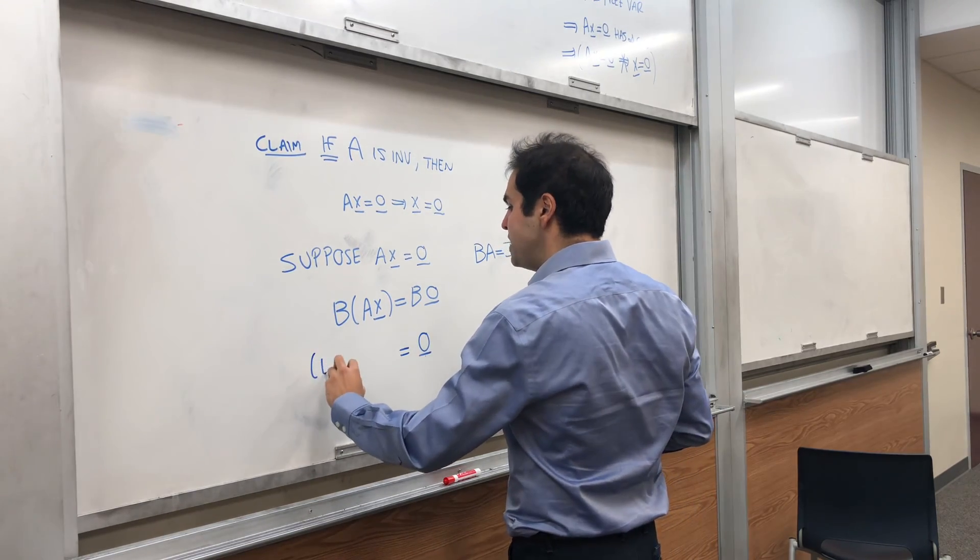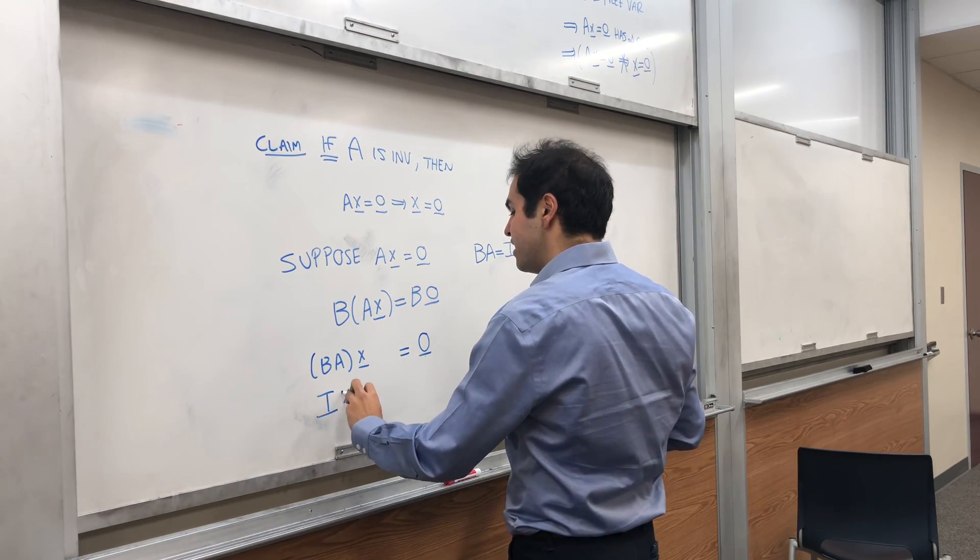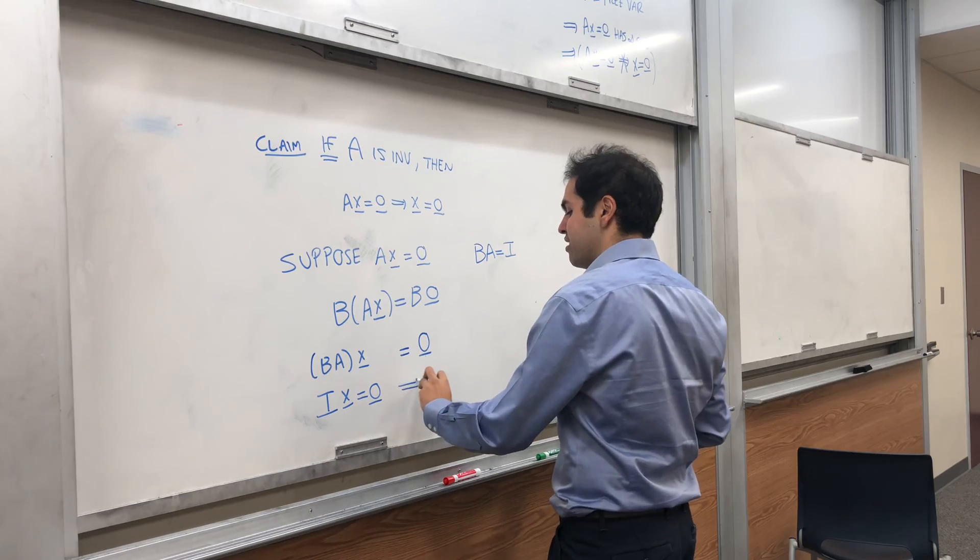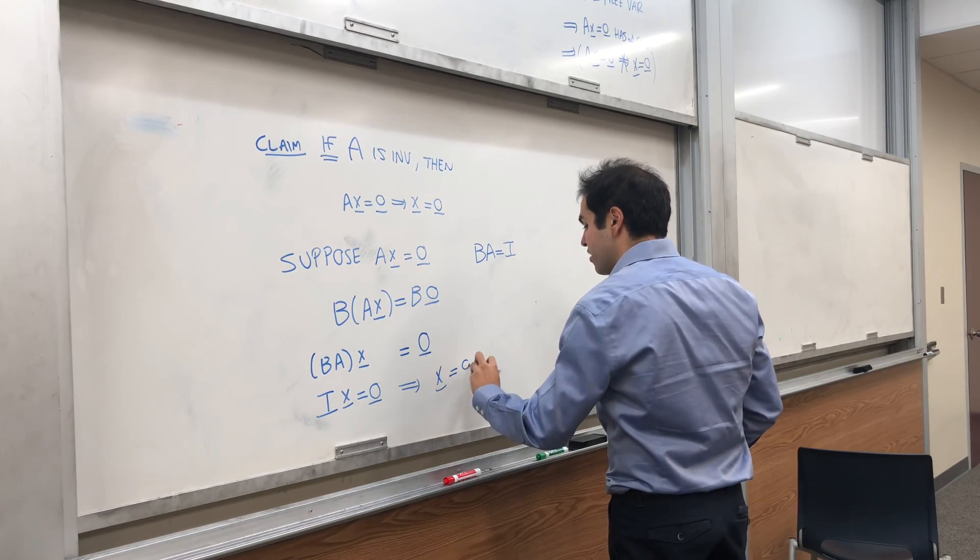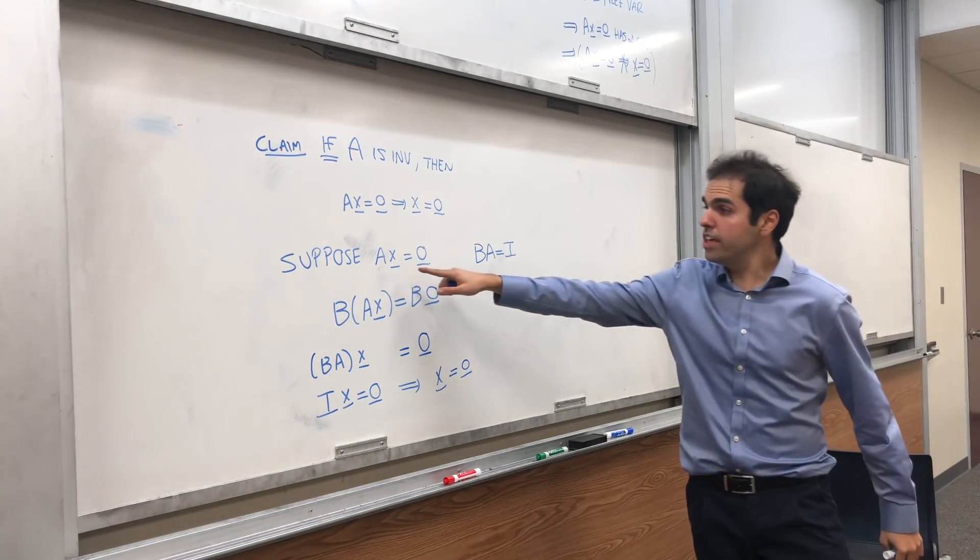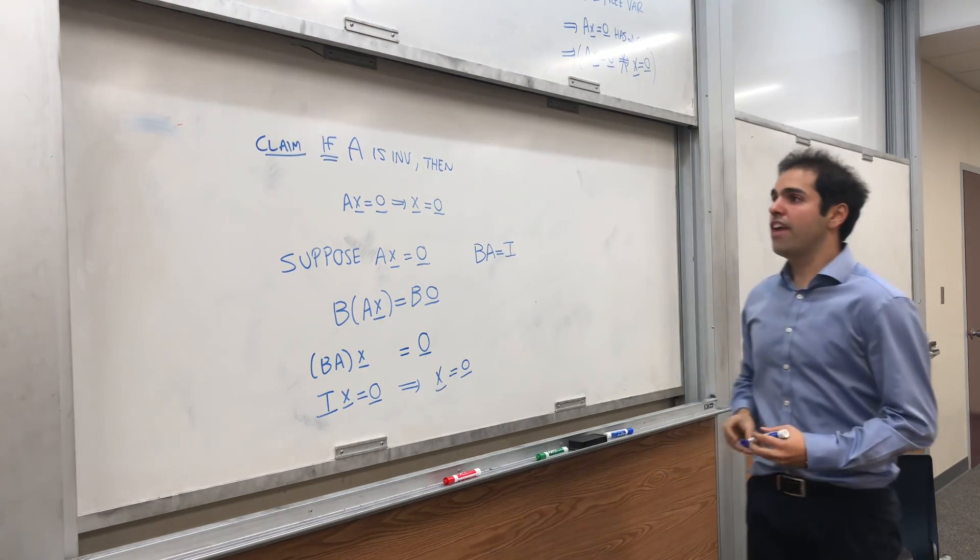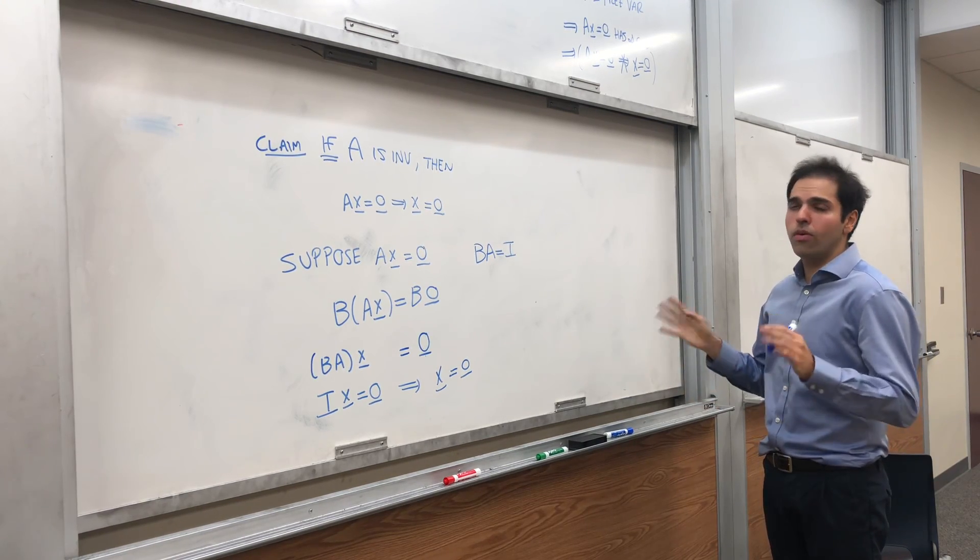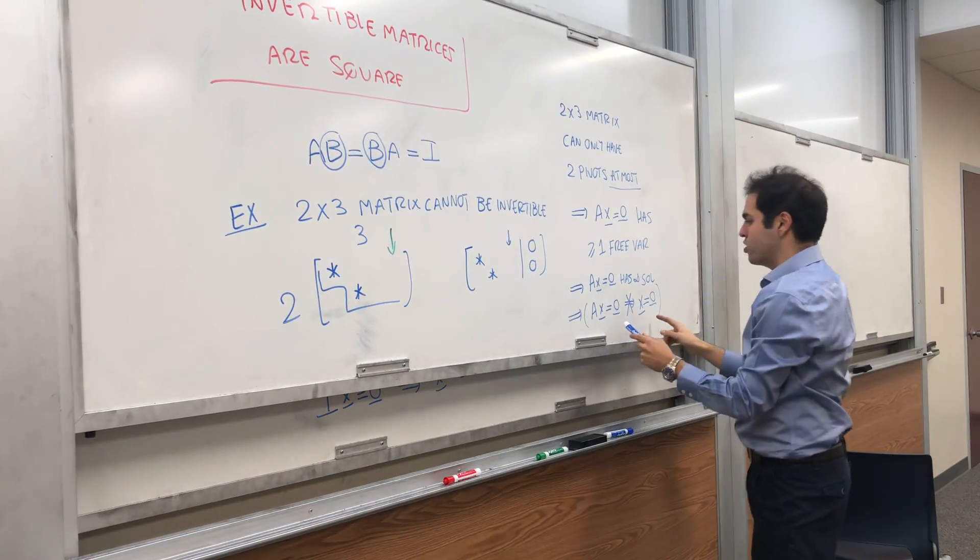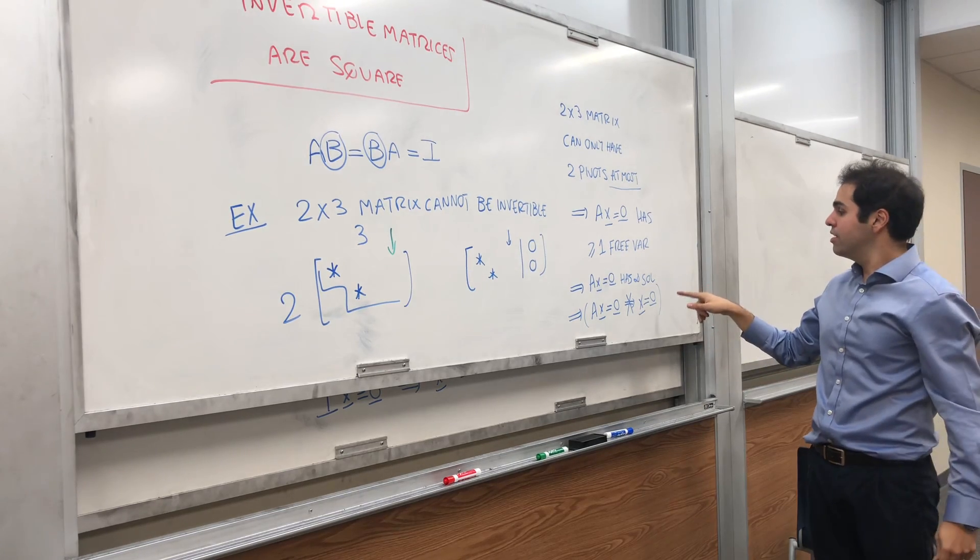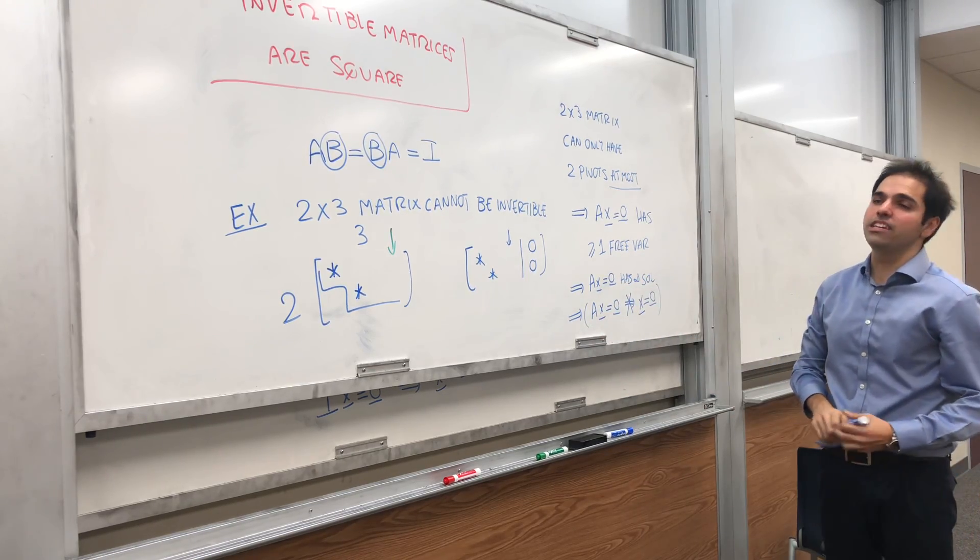You can just check it by multiplying B with the 0 vector. And this is just BAx. But remember, BAx, BA was the identity. So you get Ix is 0. But since I is the identity, it does nothing. You get x equals 0. In other words, if Ax equals 0, then x is 0. So if A is invertible, then Ax equals 0 only has a trivial solution. That said, we've shown that for such a matrix, where there are more columns than rows, this does not happen. So we conclude that this matrix cannot be invertible.